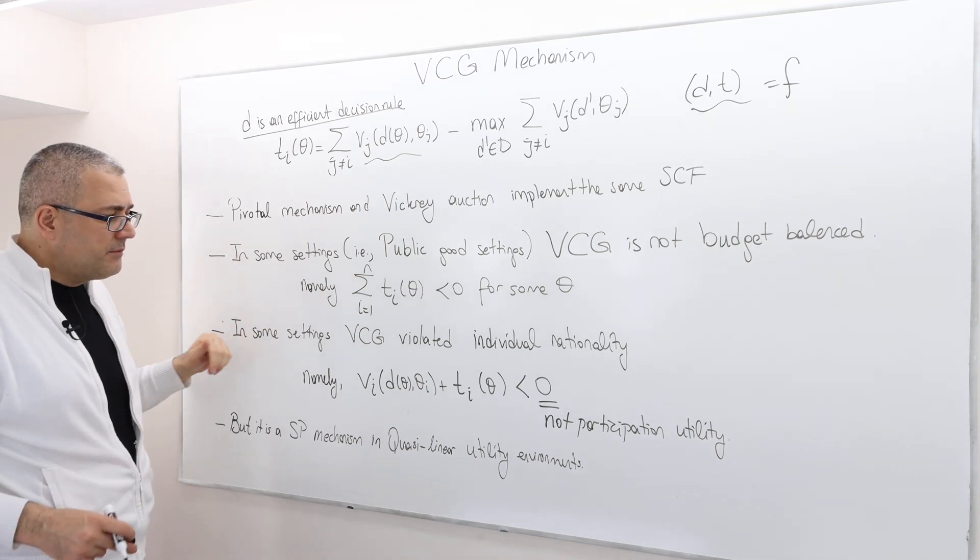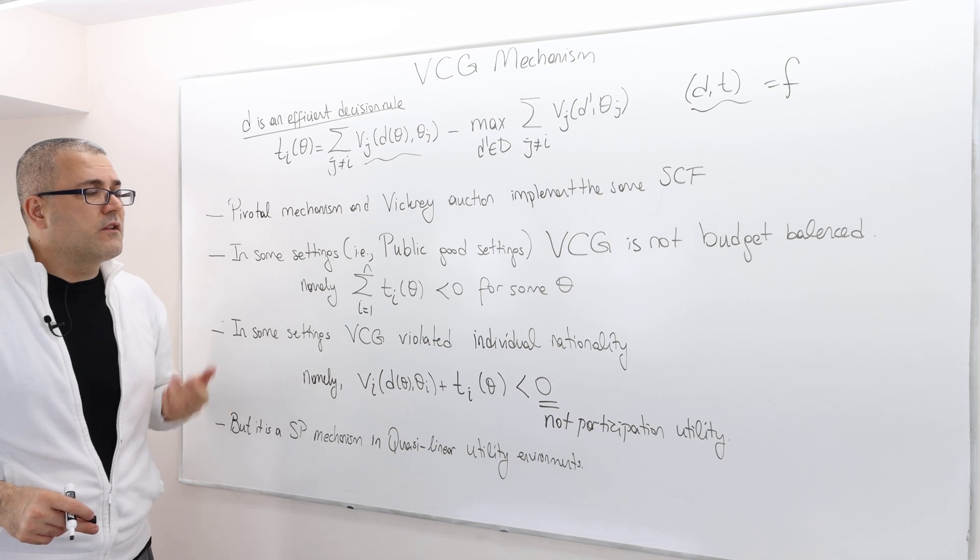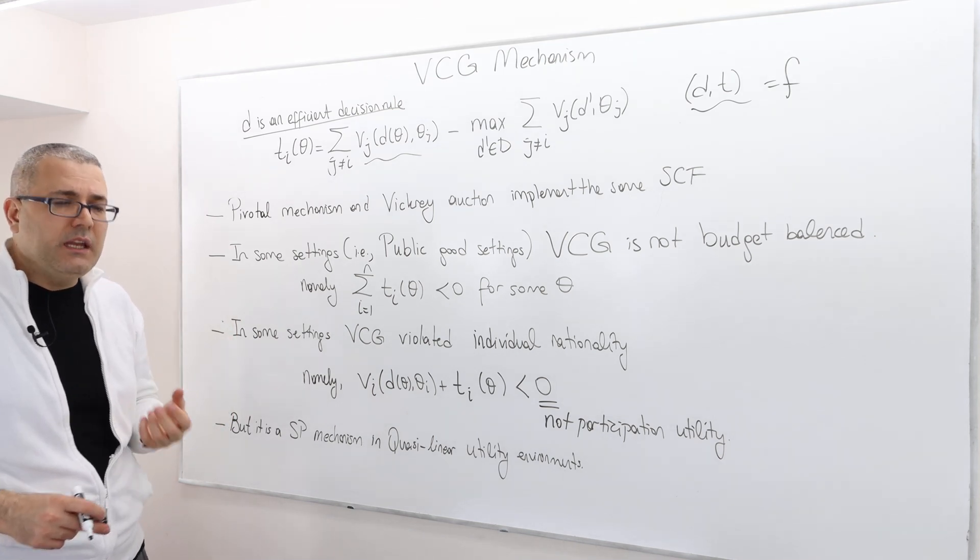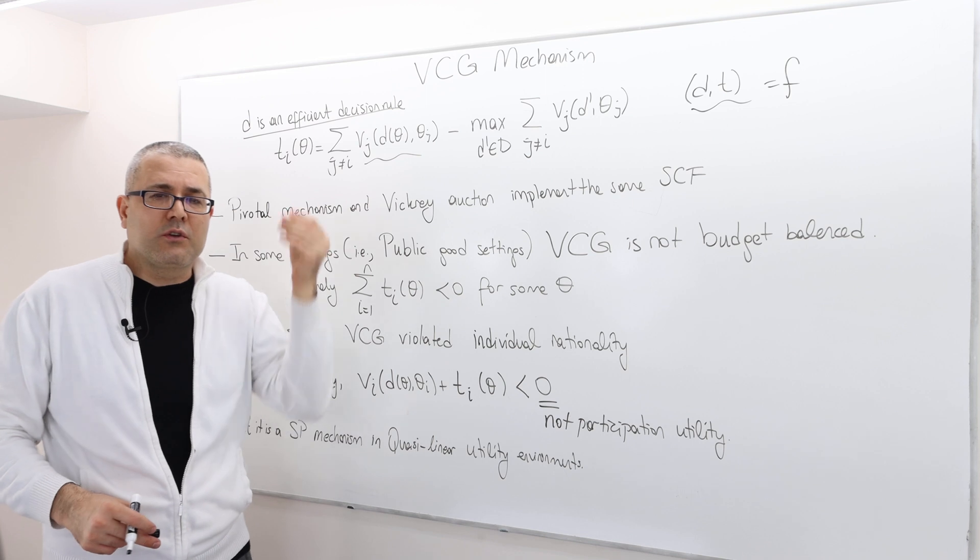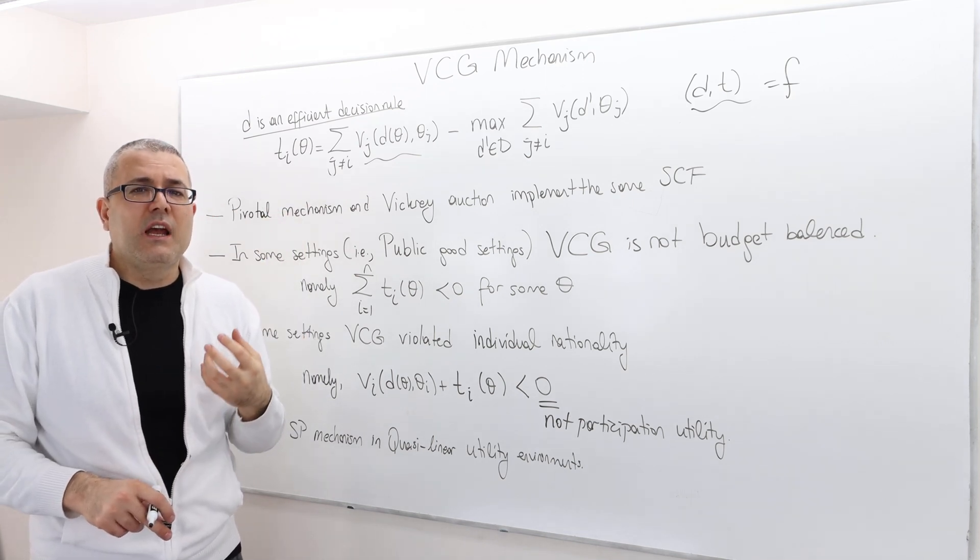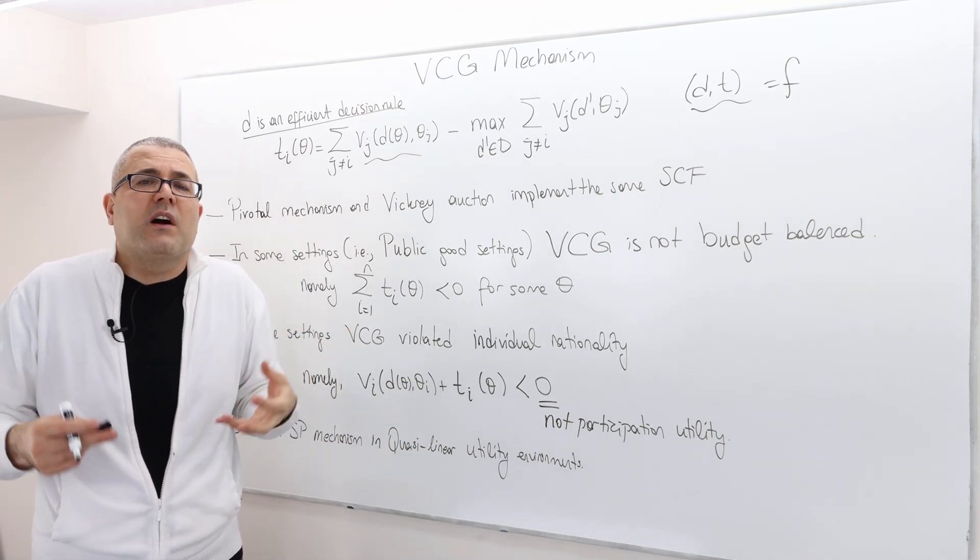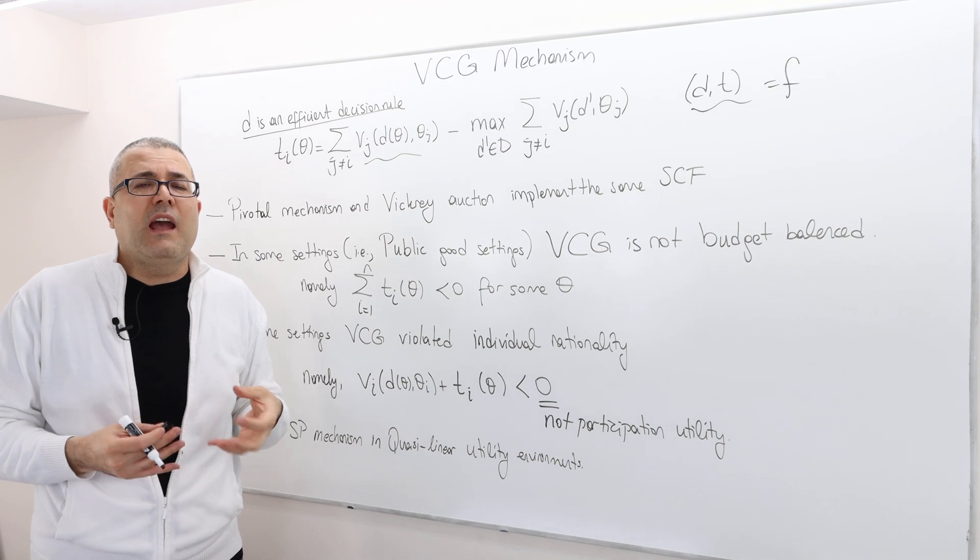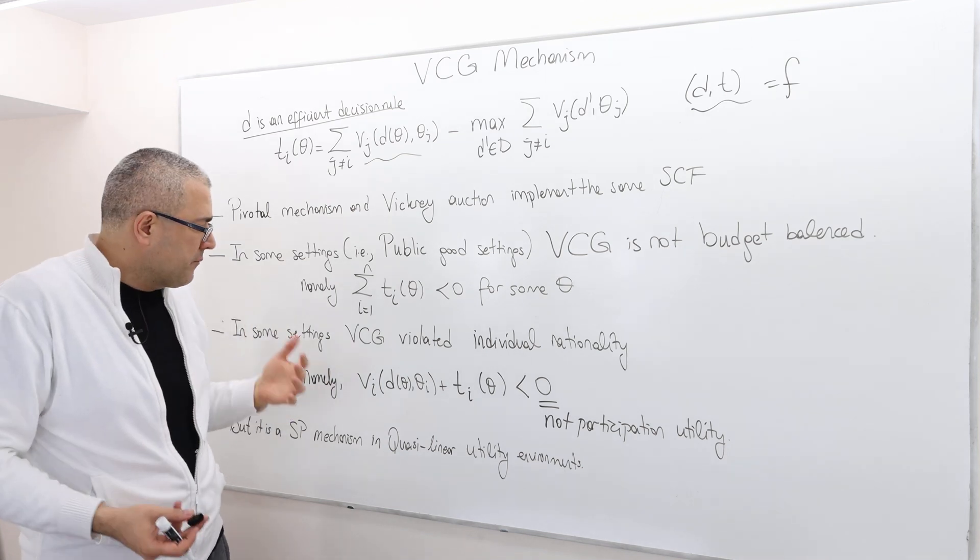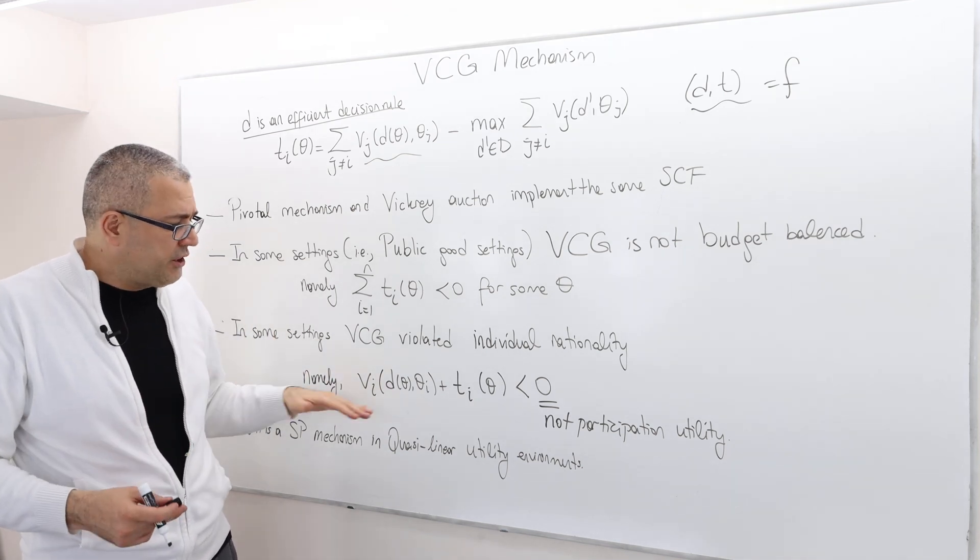Well in some settings VCG also violates individual rationality meaning the individuals or the participants of the mechanisms have no incentive to participate to the mechanism at the first place. Well what do we mean by individual rationality?